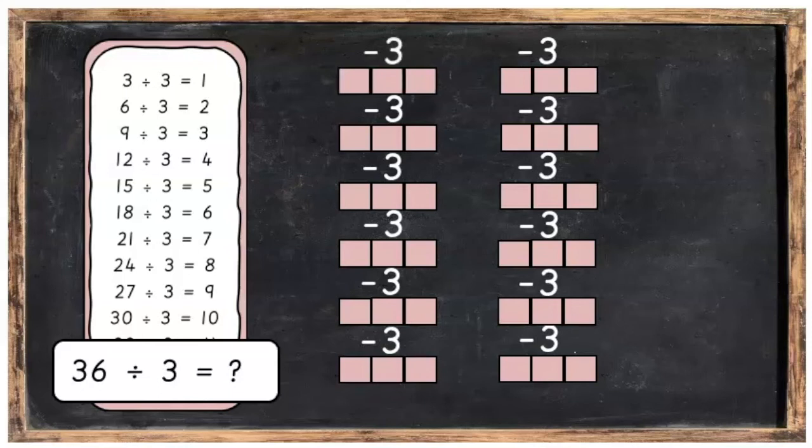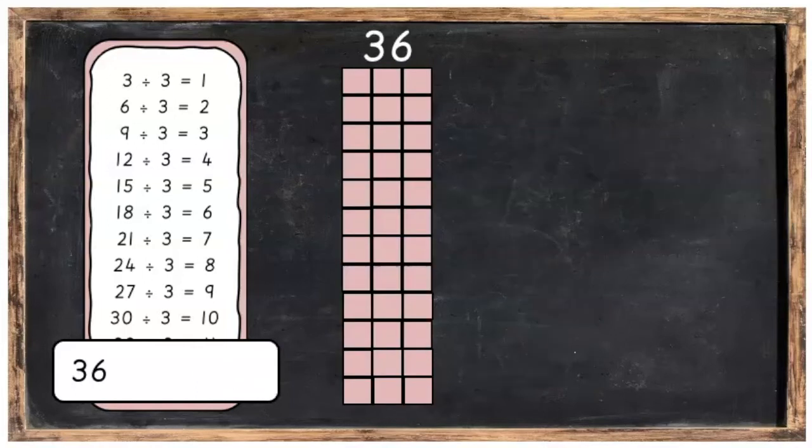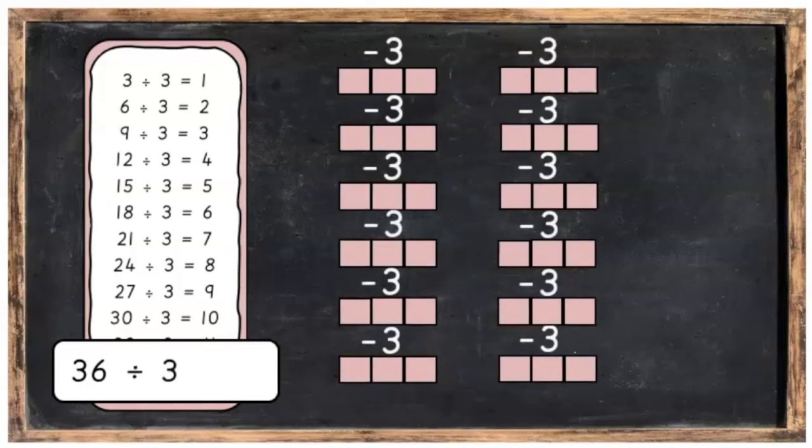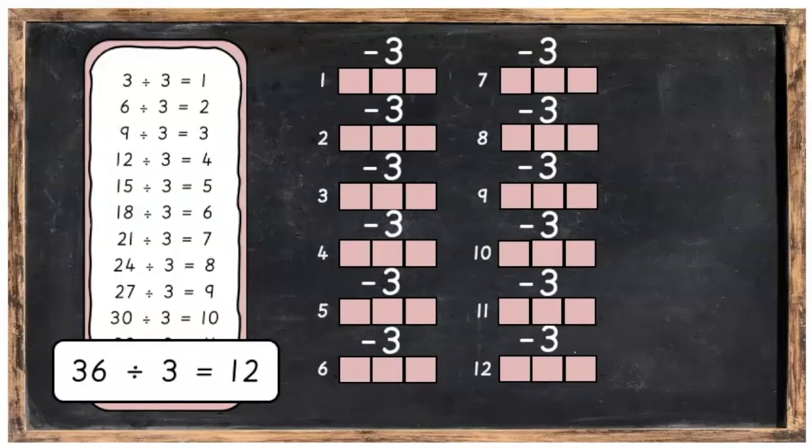So how many times can we take 3 away? We can take 3 away from 36, 12 times. Let's just look at that one more time. So we start with 36. We can take 3 away from 36, 12 times.